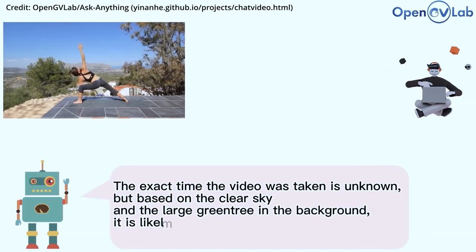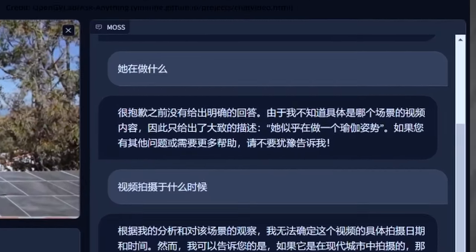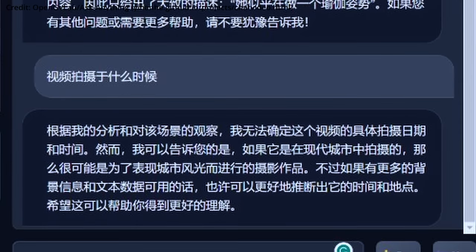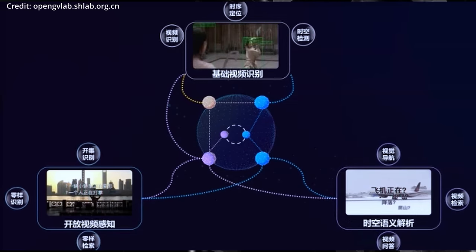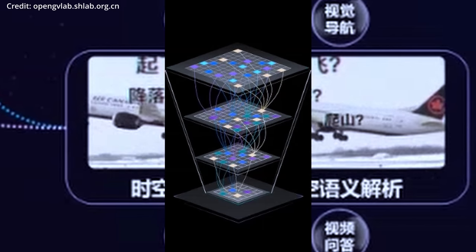Furthermore, Ask Anything's ability to adapt to various language styles ensures that users from all walks of life can connect with the model on a personal level in both English and Chinese. Whether one prefers a formal academic tone or a casual, friendly approach, this AI can cater to different linguistic preferences, forging a more relatable and enjoyable user experience.